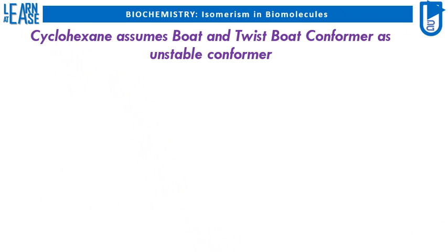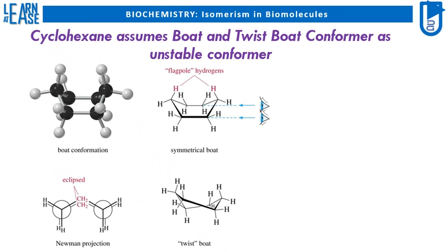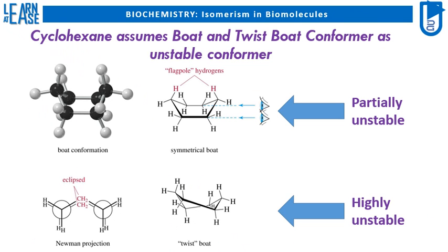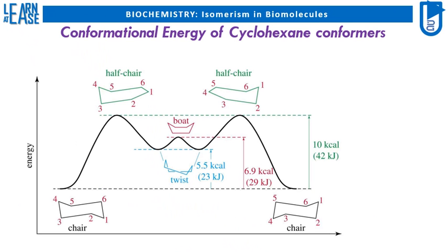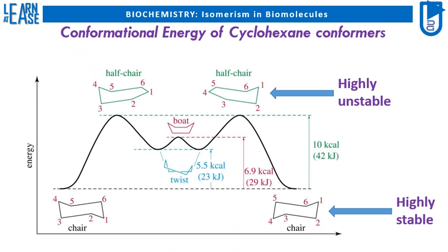Cyclohexane also assumes boat and twist-boat conformers as unstable conformers. Out of the three conformers — chair, boat, and twisted boat — the most stable is the chair conformer; the boat conformer is partially unstable; whereas the twisted boat conformer is the most unstable and has maximum potential energy. The graph of potential energy versus various conformers of cyclohexane confirms this stability order.